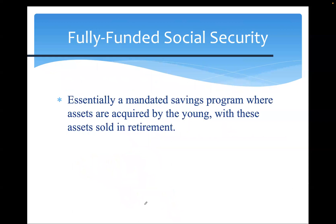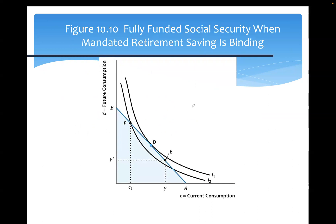The key reason social security addresses a market imperfection is that there is a missing market: you cannot trade with someone who has not yet been born. In this two-generation model, when you are young you can only lend to the old, but when you turn old, those people are gone. Social security links generations together — the current young lend to the current old, and the future young will lend to the current young when they are old. The government steps in to mitigate this missing market.